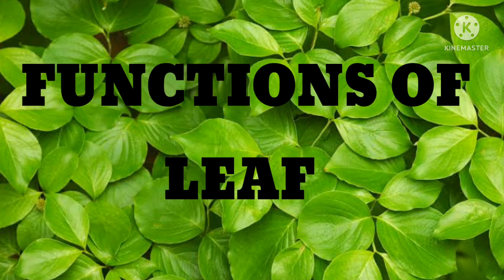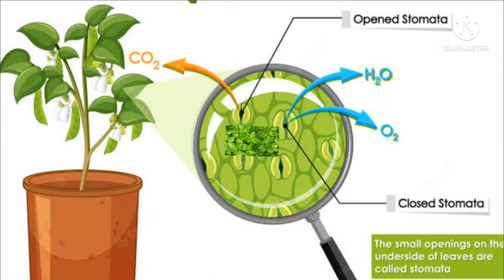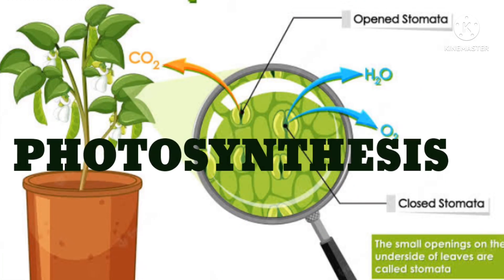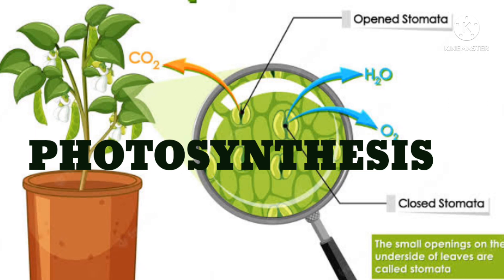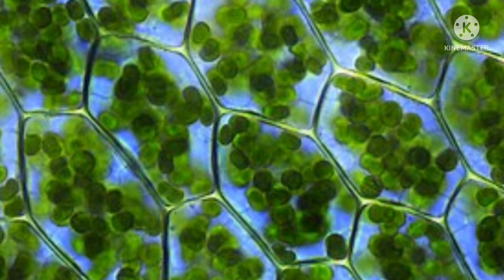Now let's discuss the main functions of the leaf. Photosynthesis: green plants have the ability to make their own food. They do this through a process called photosynthesis, which uses a green pigment called chlorophyll. Chlorophyll is located in a plant's chloroplasts, which are tiny structures in a plant cell.